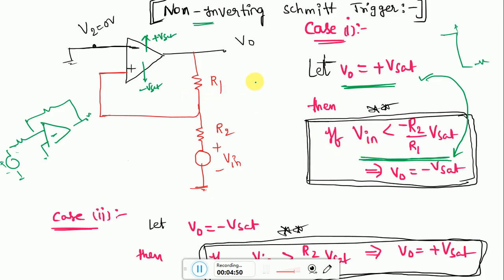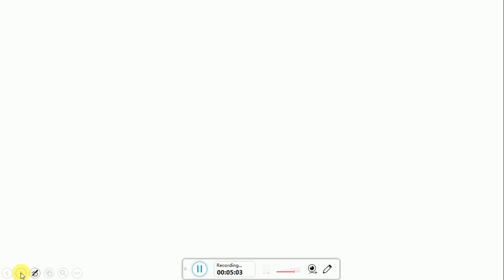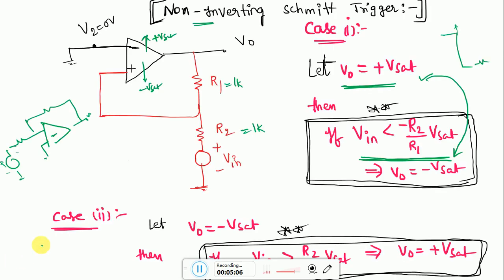Now if you go to the previous question, R1 is given as 1K and R2 is also given as 1K. You can look here, in the gate question it is given as 1K and 1K here. And Vsat is given as plus 5 volts and minus 5 volts. Now if you look here, R2 by R1 that is minus 1K by 1K into 5. So the input should be less than minus 5 volts to get from plus Vsat to minus Vsat. But our input is from plus 1 to minus 1. It is varying. So there is no possibility of changing its state from plus Vsat to minus Vsat.